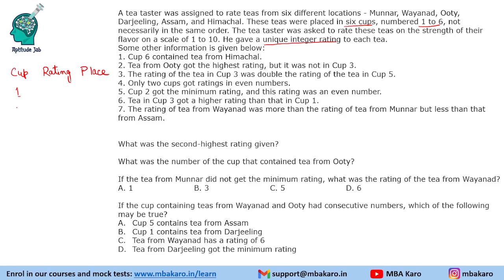So we are given that there are 6 cups, and rating and place — these 3 things need to be filled. Cup numbers are given to us, so we will arrange them first. We are given that cup 6 contains tea from Himachal, so we will put Himachal here.